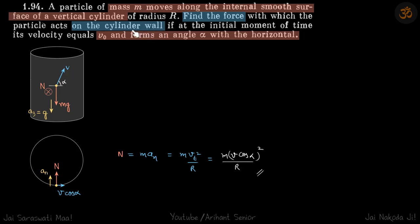So this particle is moving with velocity v at an angle α with the horizontal. What are the forces on that particle? mg is downwards and normal reaction on this particle is inwards. Its acceleration is g downwards and a_n normal towards the center.